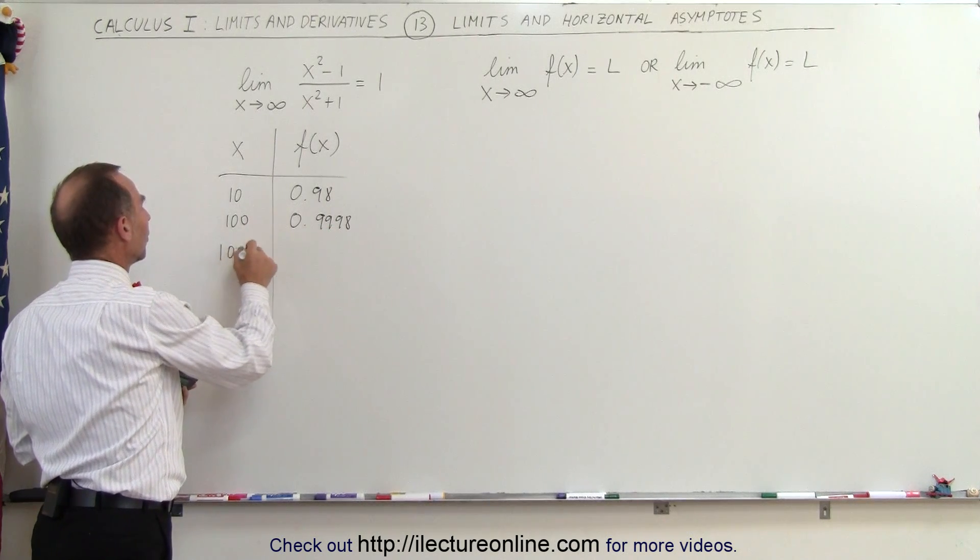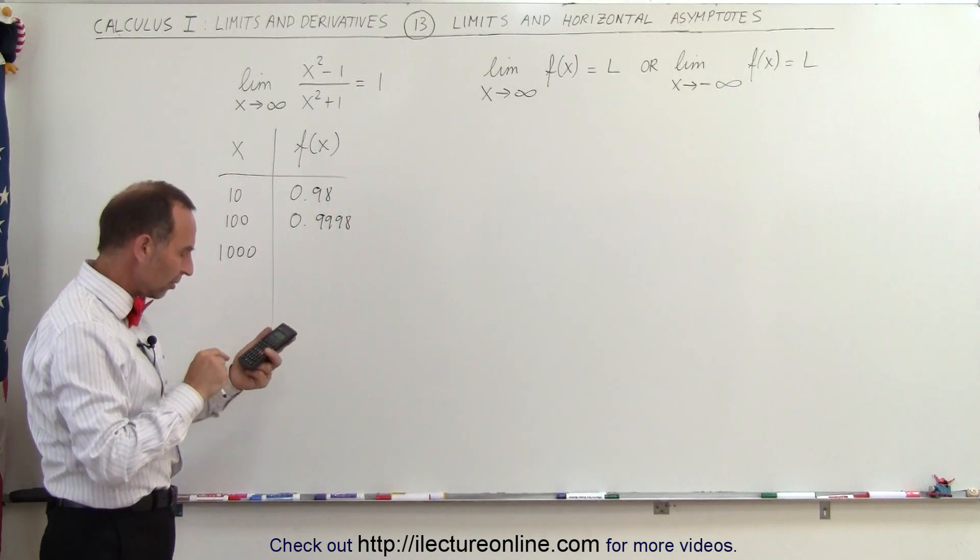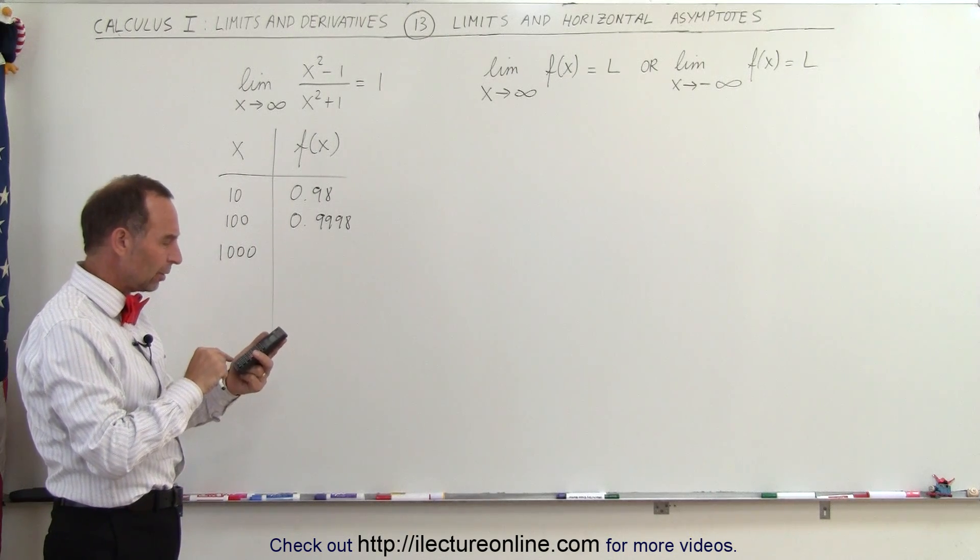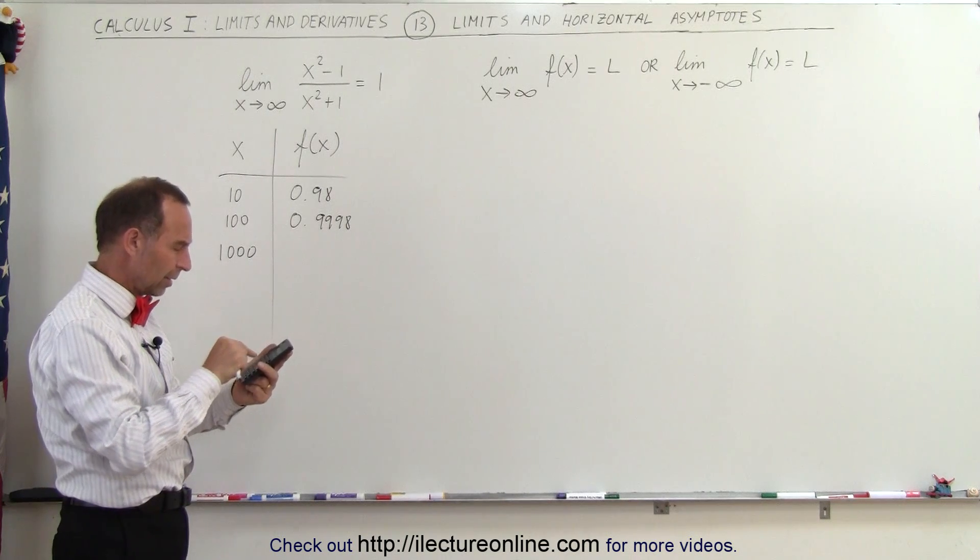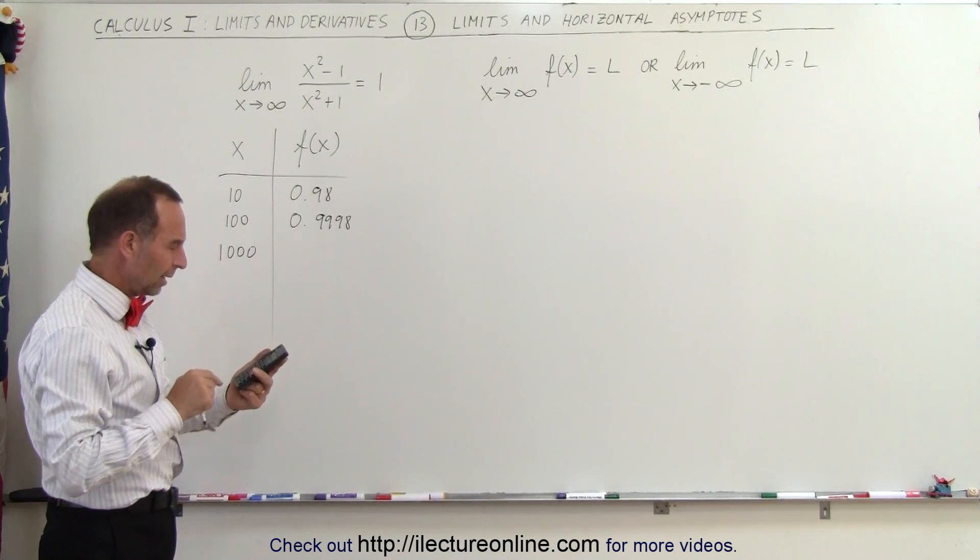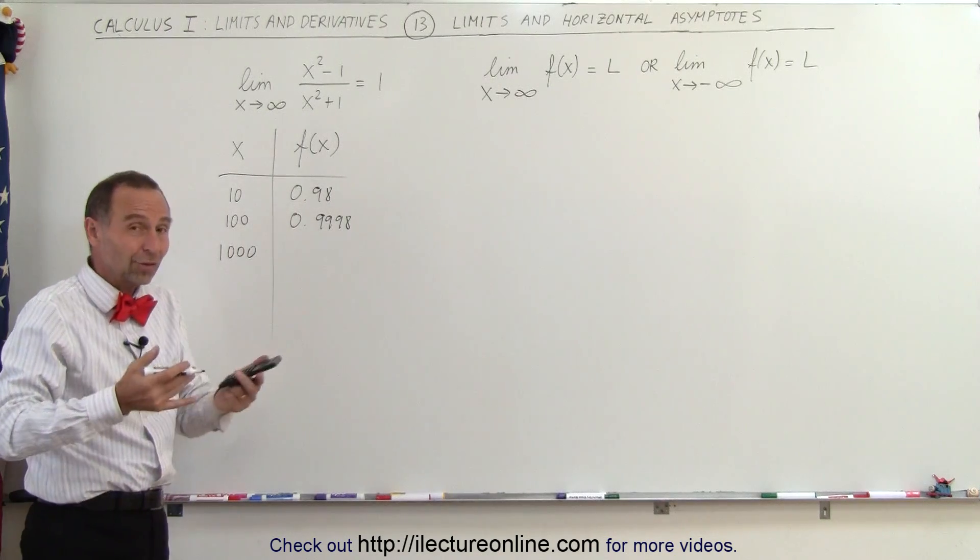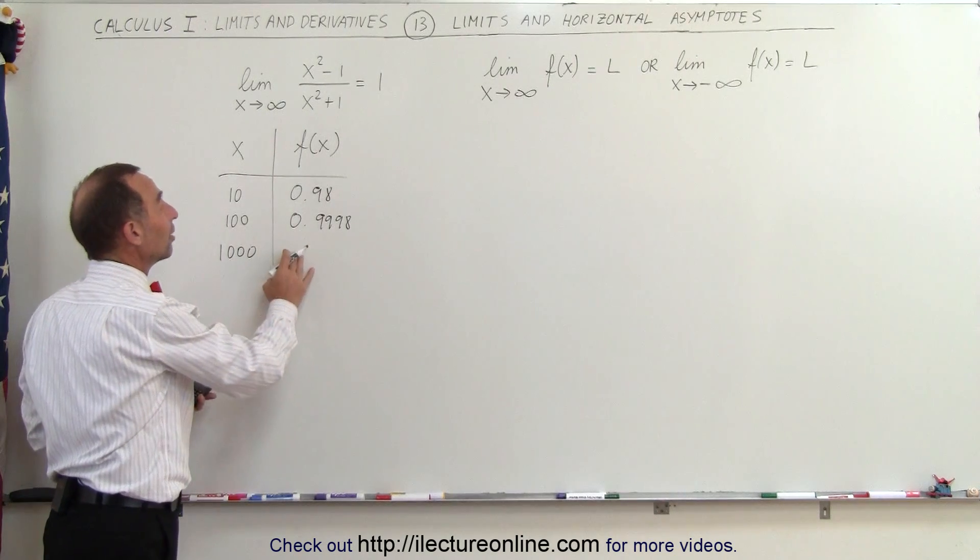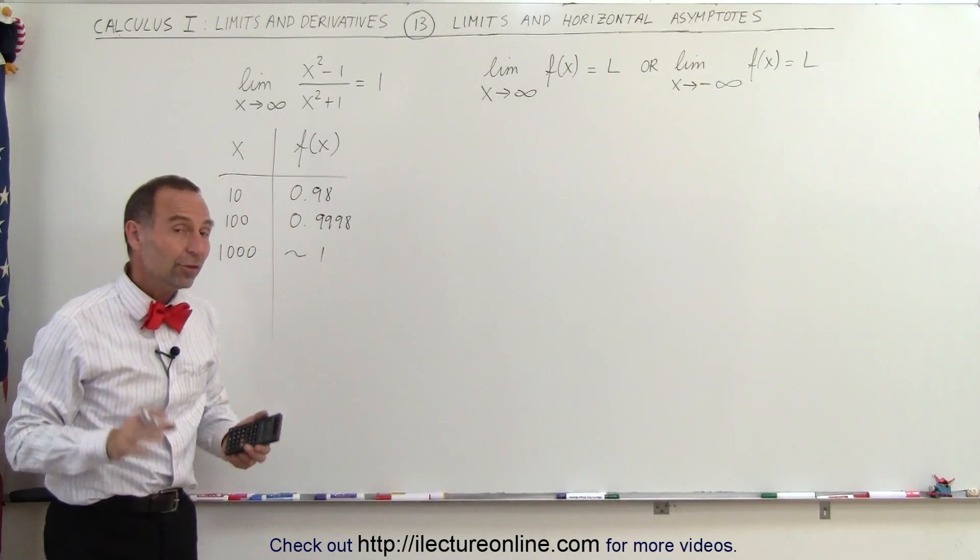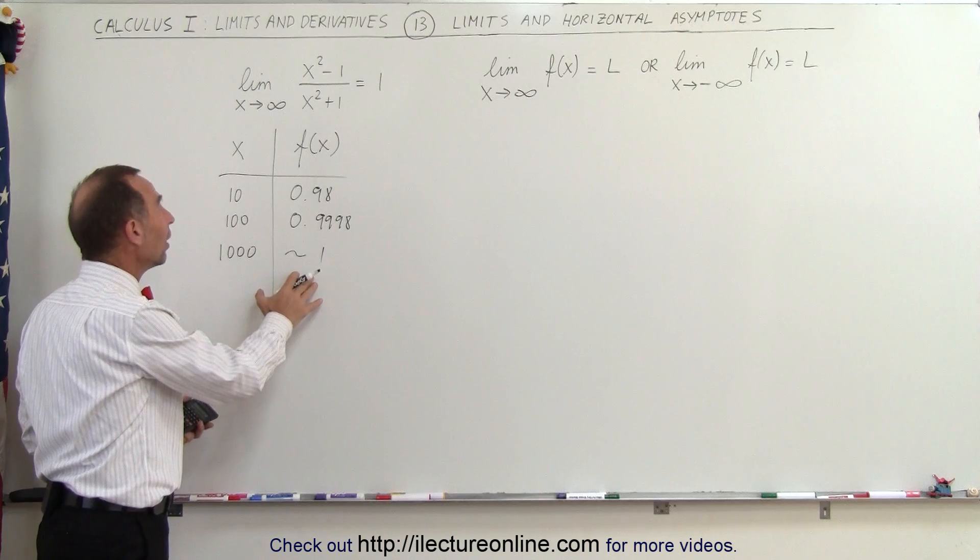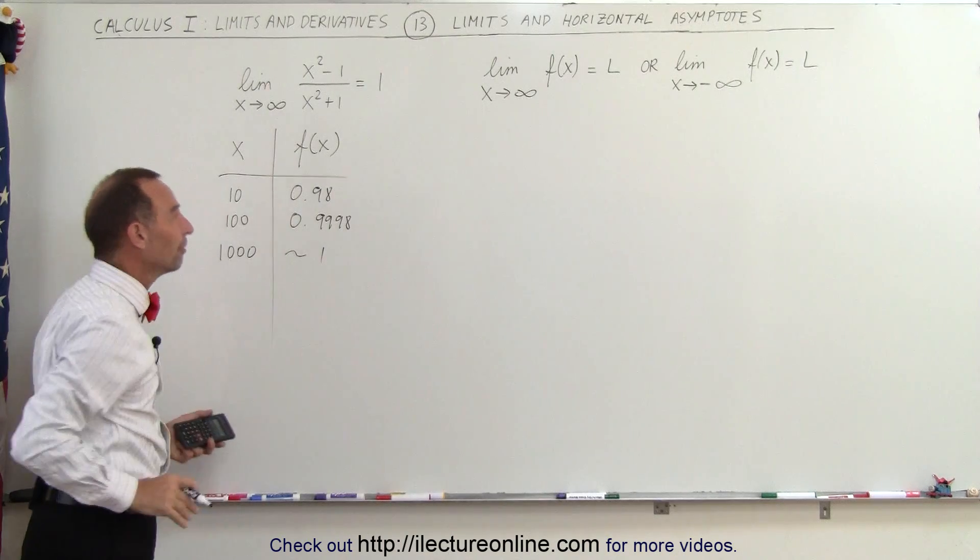How about 1,000? When x becomes 1,000 we get 1,000 squared minus 1 divided by 1,000 squared plus 1. And notice, well my calculator shows it as being equal to 1 because there's not enough significant figures, so it'll be approximately equal to 1. So you can see that this function does approach the limit of 1 as x approaches infinity.